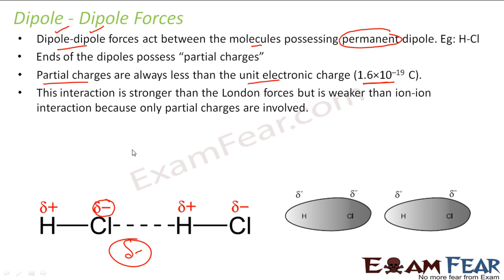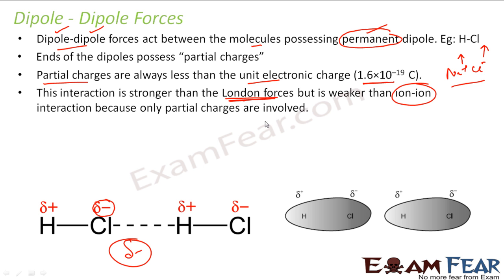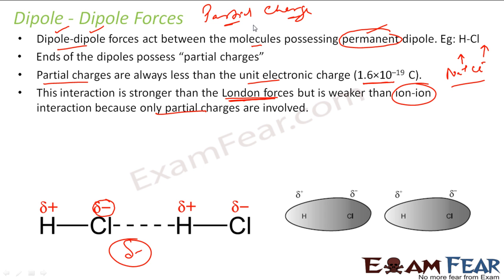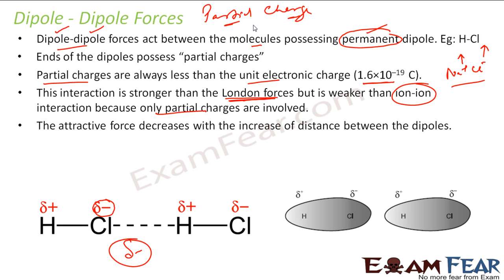This force is stronger than London force, but it is weaker than ion-ion interaction. In a Na⁺ Cl⁻ interaction, you have a full positive and full negative charge. But in dipole-dipole force, we are talking about only partial positive and partial negative charge. That's why dipole-dipole force is stronger than London force — because London forces are temporary — but weaker than ion-ion interaction, where full charge is involved.